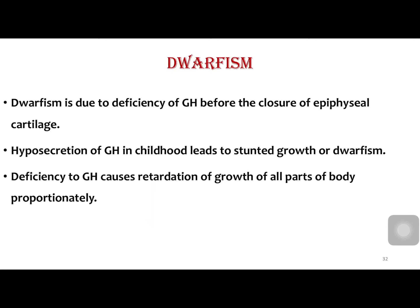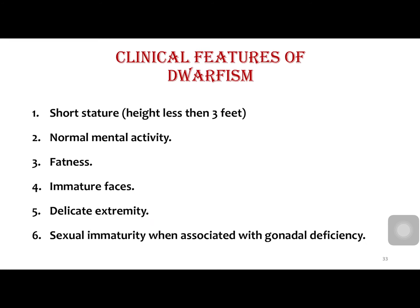Dwarfism is due to deficiency of growth hormone before closure of the epiphyseal plates. Hyposecretion of growth hormone leads to stunted growth and dwarfism. Clinical features are short stature, normal mental activity, fat or stout build, immature face, and delicate extremities. Sexual immaturity is generally associated with gonadal deficiency. The treatment for dwarfism is growth hormone replacement. That's all about anterior pituitary — if you have any questions, you can put them in the comment section. Thank you.